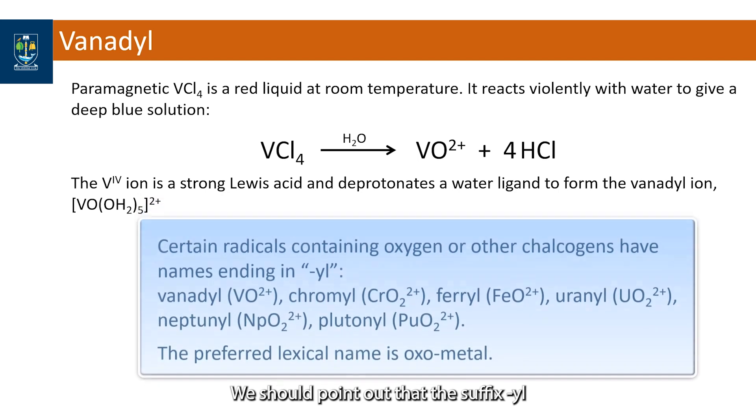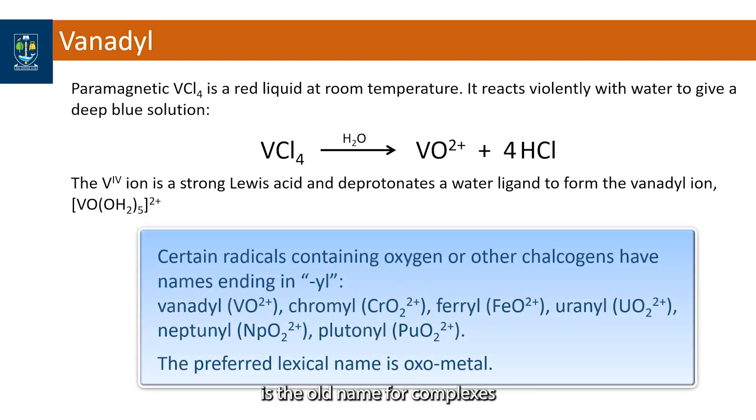In water the vanadyl ion includes five waters which make up a six coordinate tetragonal complex. We should point out that the suffix -yl is the old name for complexes with oxo ligands such as vanadyl, chromyl and ferryl along the same lines as we pronounce carbonyl.